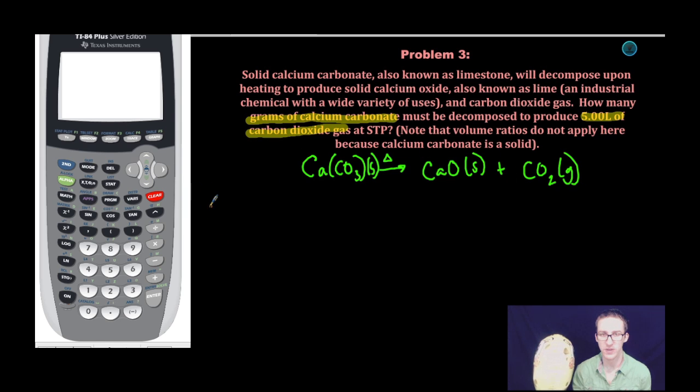I'm always going to start with the amount that I'm given, in this case, 5.00 liters of CO2. The very first thing I'm going to do here is convert my liters of CO2 to moles of CO2. I have to do that because I'm comparing a gas to a solid, and the volume ratios only apply when both things we're comparing are gases measured at the same temperatures and pressures. Because we're at STP,